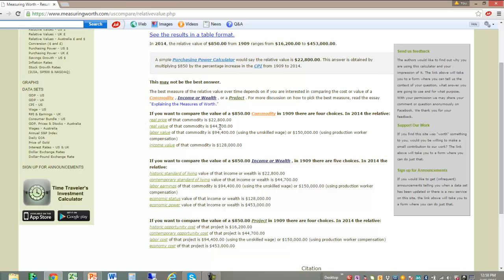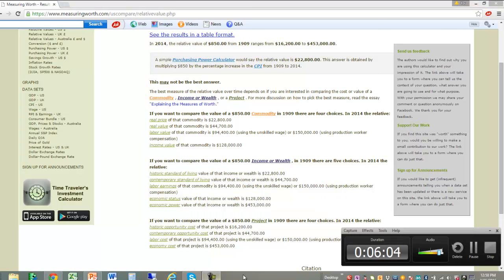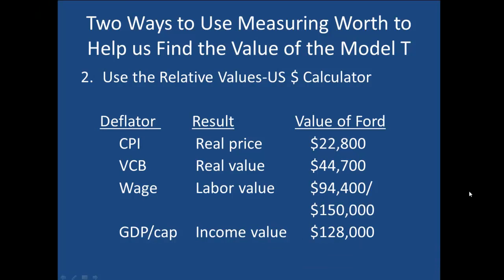Let's go back to our slides to look at a table. The question is, how do we evaluate the different answers we get from Measuring Worth? I've produced a table showing the four main results. This is further developed in Tutorial 4 on MeasuringWorth.com. The first result, called the real price, uses the CPI, and we get nearly the same result as when we did the calculations ourselves. The other results differ in that they use a different deflator, or measure of the increase in prices over time, and thus ask slightly different questions about the value of the Model T.